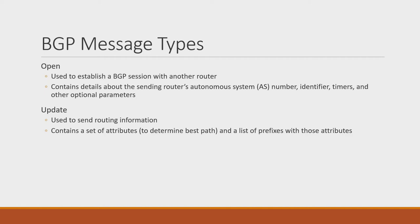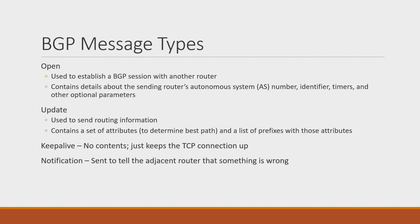The second type, the update message, is used to send routing information to the other router. In BGP, a given set of attributes is mapped to a set of prefixes — a more scalable approach as it prevents duplicate attribute sets from being sent for different prefixes. The third type, the keep-alive message, is a simple message with no actual information; it's just sent by routers to keep the underlying TCP session up. The last type is the notification message, which is only sent when something is wrong — perhaps a problem with the open message, an unsupported address family, or a missing mandatory attribute. Notification messages are how one router lets the other know what the problem is.